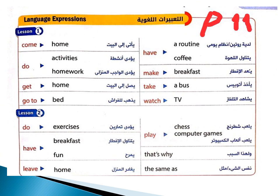كوم هوم - يأتي إلى البيت، ودايما كلمتهم وبيجيش معها حروف جر. لو جي قبلها فعل ما فيش بينهم حرف جر: come home, go home, arrive home, reach home, get home. دو أكتيفيتيز - يؤدي أنشطة. دو هوم وورك - يؤدي الواجب.